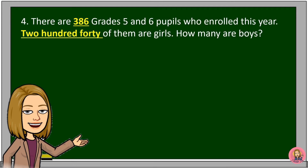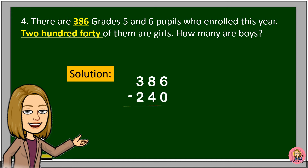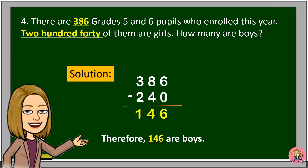There are 386 grade 5 and 6 pupils who enrolled this year. 240 of them are girls. How many are boys? Here's the solution: We will subtract 240 from 386. 6 minus 0 is equal to 6. 8 minus 4 is equal to 4. 3 minus 2 is equal to 1. Therefore, 146 are boys.